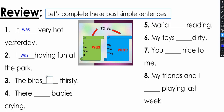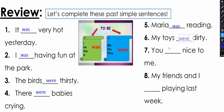The birds were thirsty. They were thirsty. There were babies crying. Maria was reading this morning. My toys were dirty but I cleaned them. You were nice to me all the time during school days. My friends and I were playing last week. So this is how we use the linking verbs was and were.